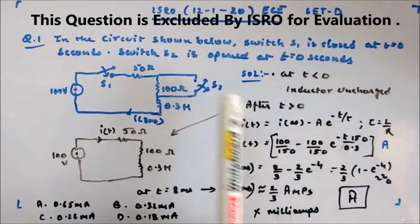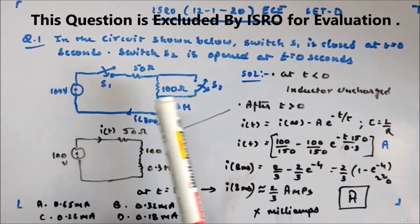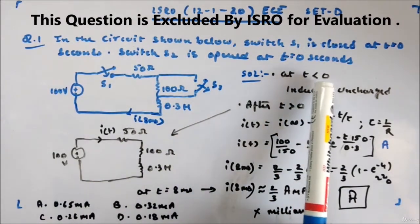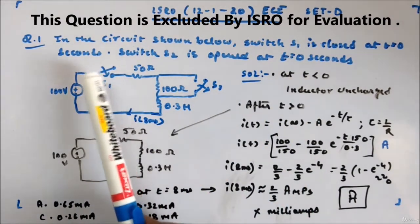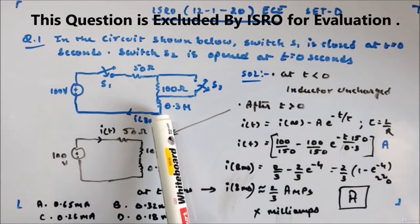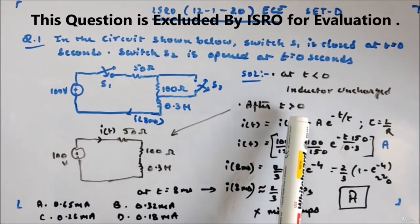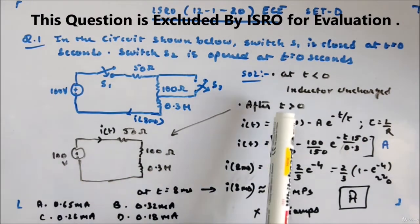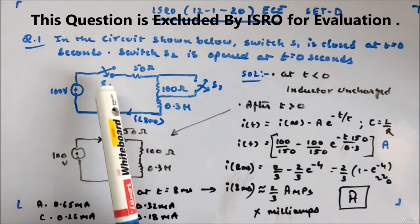For the solution, since at t less than 0 the switch S1 was open, the inductor was uncharged. At t equal to 0 greater than 0, after switching, this will be closed and this will be open.